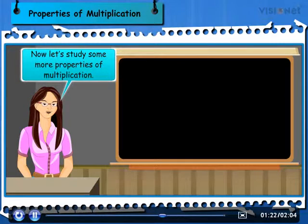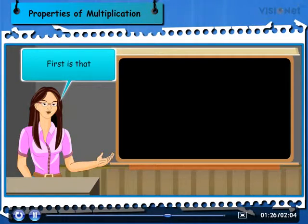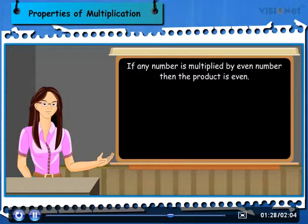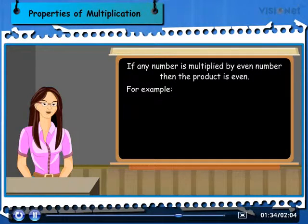Now let's study some more properties of multiplication. First is that if any number is multiplied by even number, then the product is even. For example, 235 × 4 is equal to 940. 51 × 6 is equal to 306.